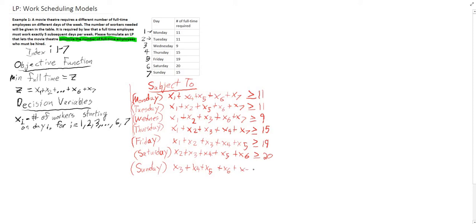So in this, we have to find an index of 1 through 7 representing the days Monday, Tuesday, Wednesday, Thursday, Friday, Saturday, and Sunday. We've looked at our objective function to minimize the full-time employees — that's X1 through X7, the summation of that. And we've defined our decision variable as the number of workers starting on day i, for i equals 1 through 7.